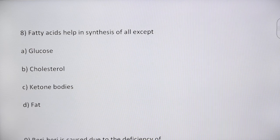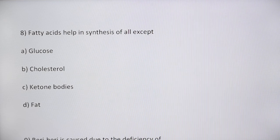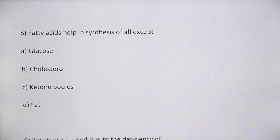Next question: fatty acids help in synthesis of all except — glucose, cholesterol, ketone bodies, or fat. Glucose can be formed from fatty acids through gluconeogenesis. Cholesterol is not synthesized from fatty acids; it can be synthesized within the body through the HMG-CoA pathway, with HMG-CoA reductase as the rate-limiting enzyme. Therefore, the answer is cholesterol — option B.